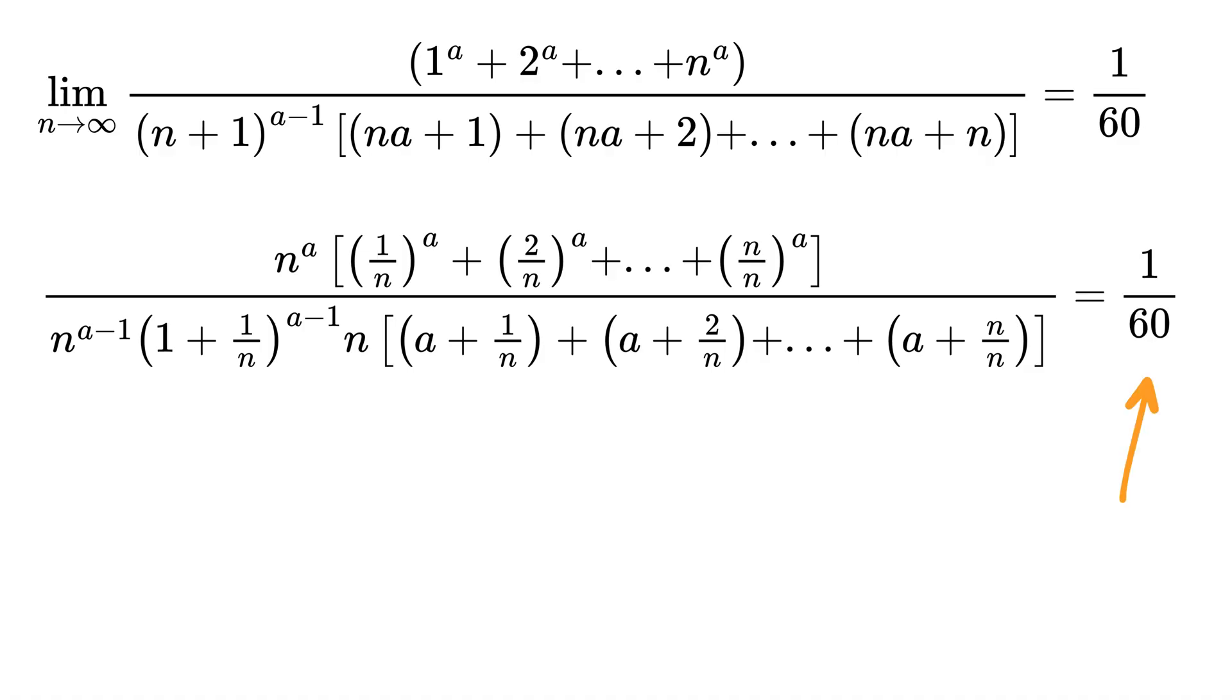Wow, look at this: n power a minus 1 times n will be the same as n power a, and thus it will be cancelled from the n power a in the numerator, and we are left with this.